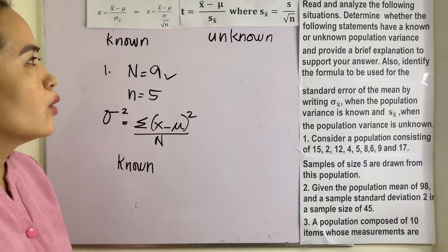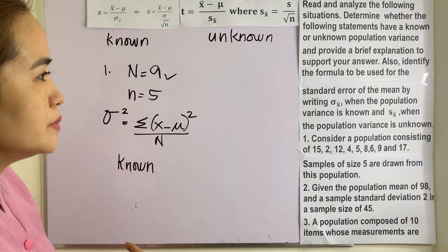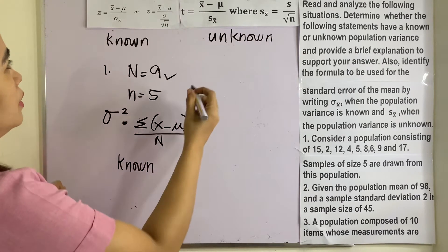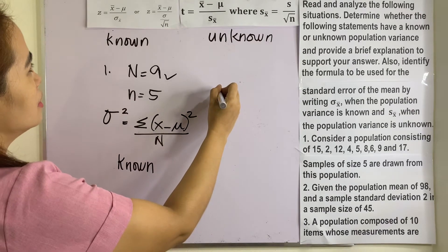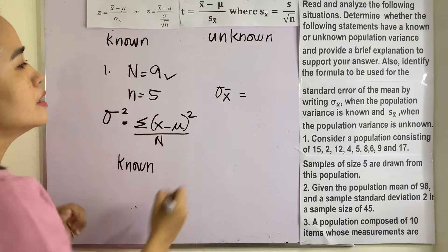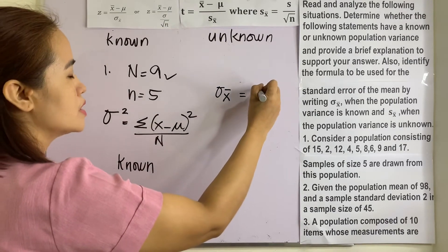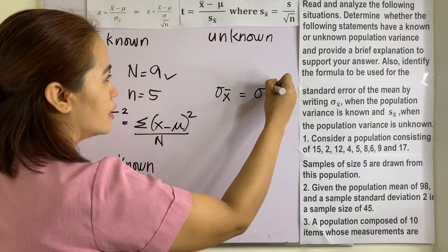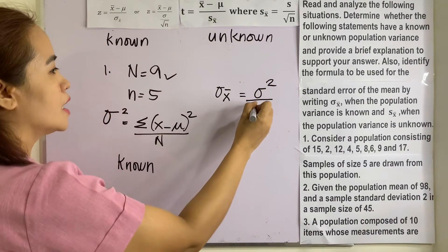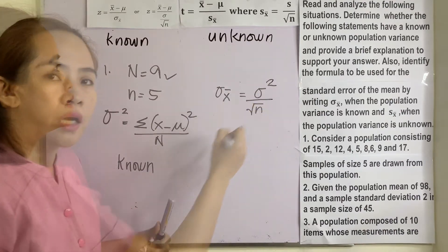Now, what is the standard error of the mean? We can use the formula for the standard error of the mean — this one — which is equivalent to the population standard deviation divided by the square root of n.